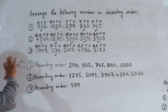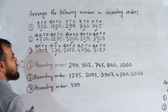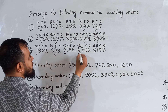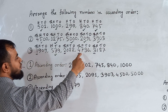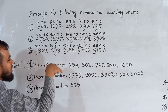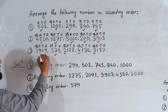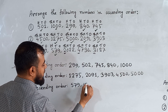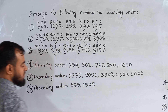The remaining four numbers all have thousands as the highest place value. Comparing the thousands digits: we have 1, 2, 4, and 3. Among these, 1 is the smallest, so we write 1909 next after 579.